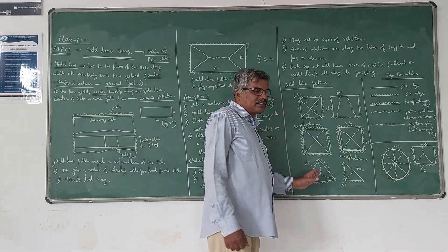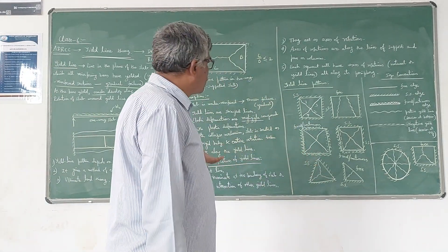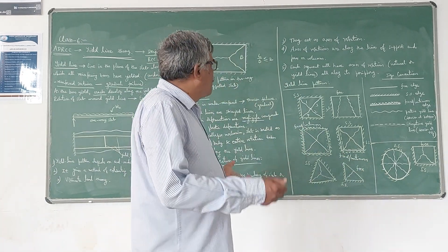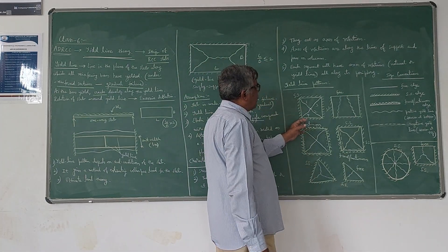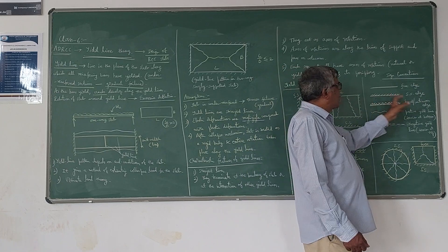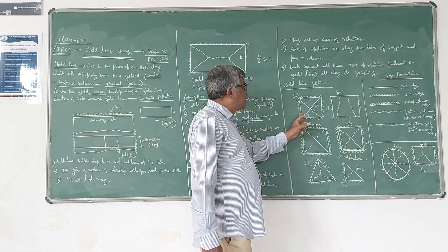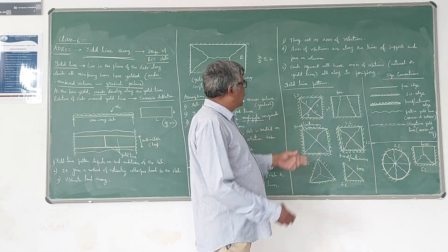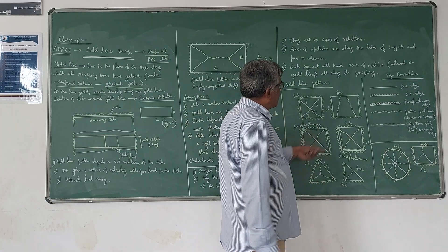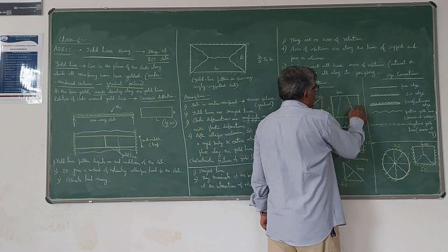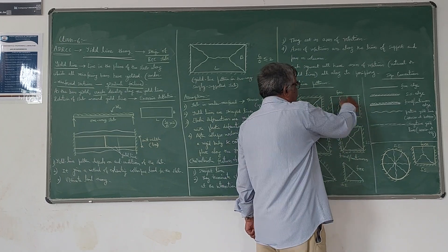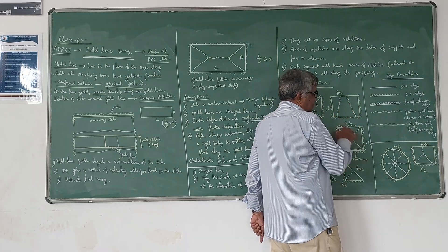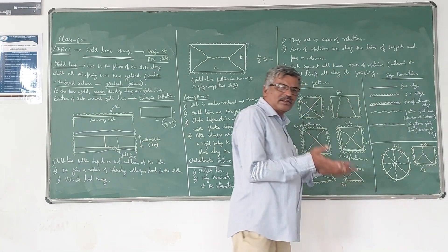Now some examples of yield line patterns are shown for different slab conditions. In the first example, all edges are simply supported — this gives a positive yield line pattern as shown. In the second example, three sides are simply supported and one side is free, giving a yield line pattern as shown — the yield line may extend in different orientations depending on experimental results.